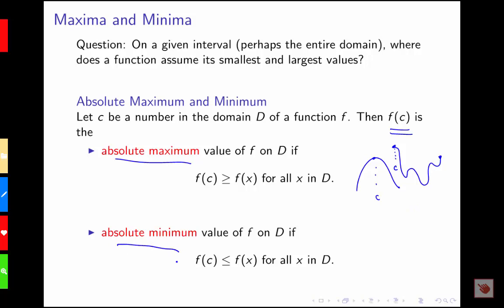When I talk about the absolute minimum value of my function, I'm saying that value needs to be less than all of my other function values over my whole domain. So I'm thinking about maybe something like this, where this is my c value, which is the minimum over my whole domain, or maybe something like this where this point is my absolute minimum.